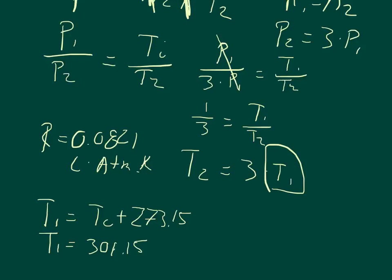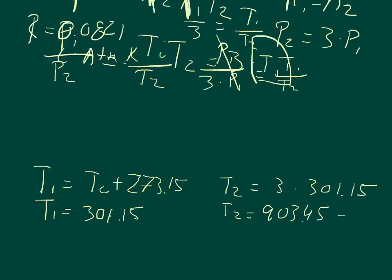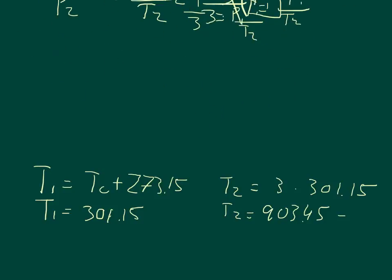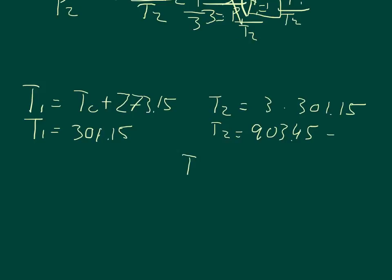And so T2 equals 3 times 301.15. So T2, and this is in units of Kelvin, T2 is equal to 903.45 Kelvin. Now it wants the answer in Celsius, so we've got to subtract 273.15 from that answer. And the final answer in units of Celsius is that the temperature final of Celsius is 630.3 degrees Celsius.